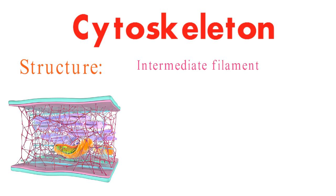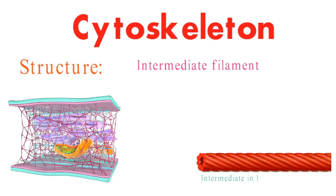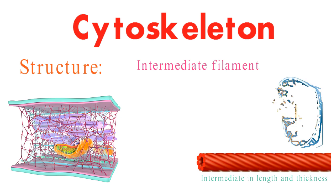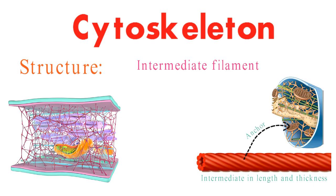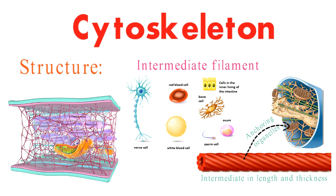Intermediate filaments are intermediate in length and thickness between microtubules and actin filaments, and they provide the cell with strength and flexibility. They are also involved in anchoring organelles to the cytoskeleton. Intermediate filaments are made up of a variety of different proteins, depending on the cell type.